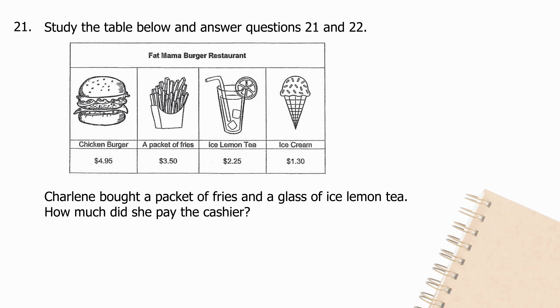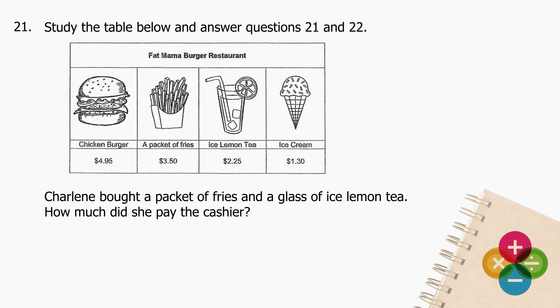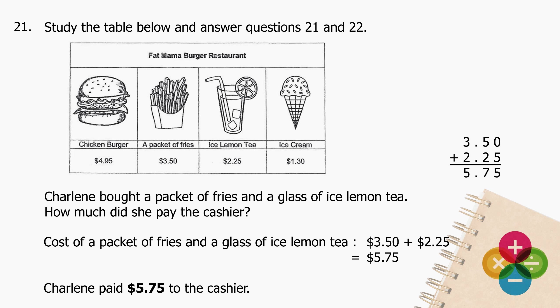Question 21: Study the table below and answer questions 21 and 22. Charlene bought a packet of fries and a glass of ice lemon tea. How much did she pay? Add $3.50 to $2.25 and the sum is $5.75. Charlene paid $5.75 to the cashier.